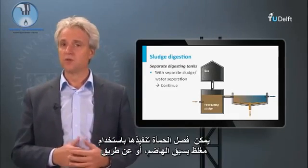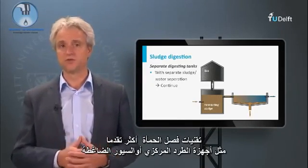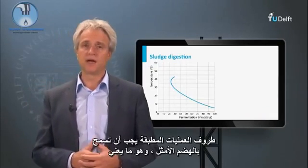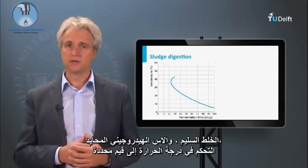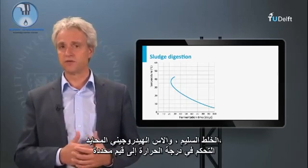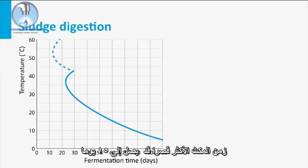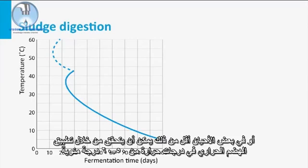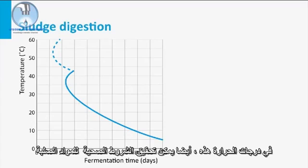Sludge separation can be performed using a post-digestion thickener or more advanced techniques such as centrifuges or belt presses. Optimal process conditions include proper mixing, neutral pH, and temperature control. At the most common digestion temperature of 30–35 degrees Celsius, the general detention time is about 20–25 days. Shorter detention times of 15 days or less can be achieved by applying thermophilic digestion at temperatures of 50–60 degrees Celsius, at which solids hygienisation is also achieved.